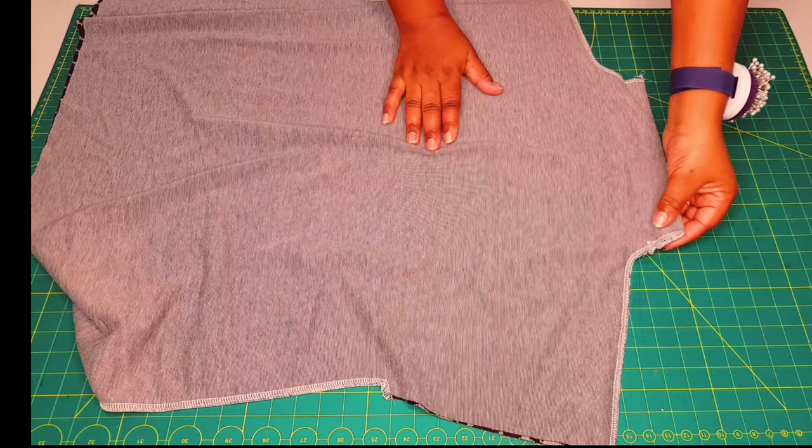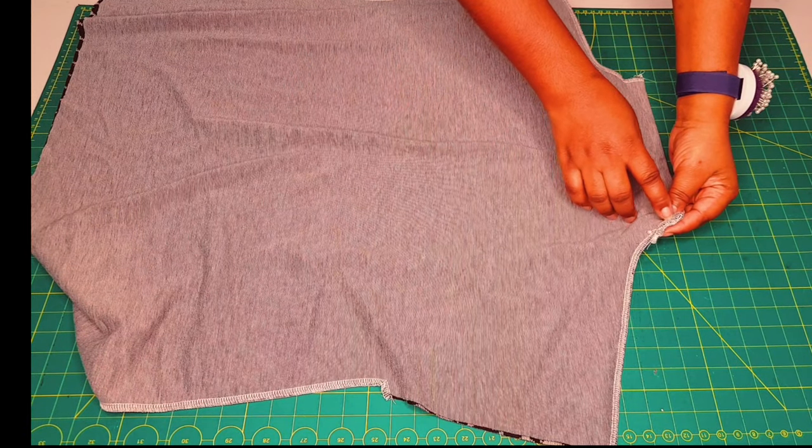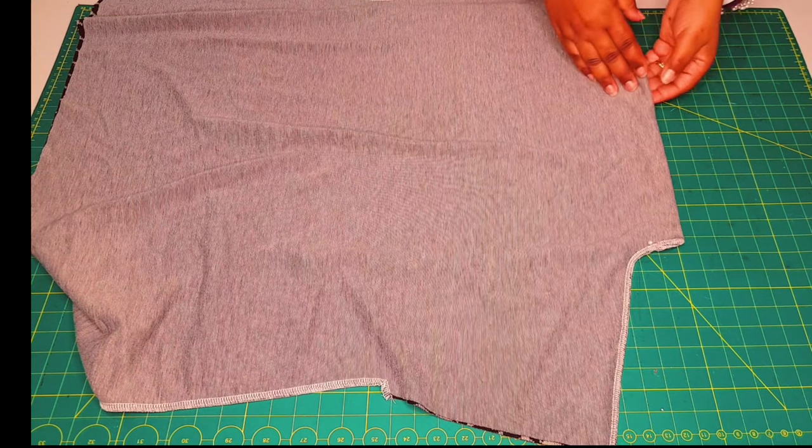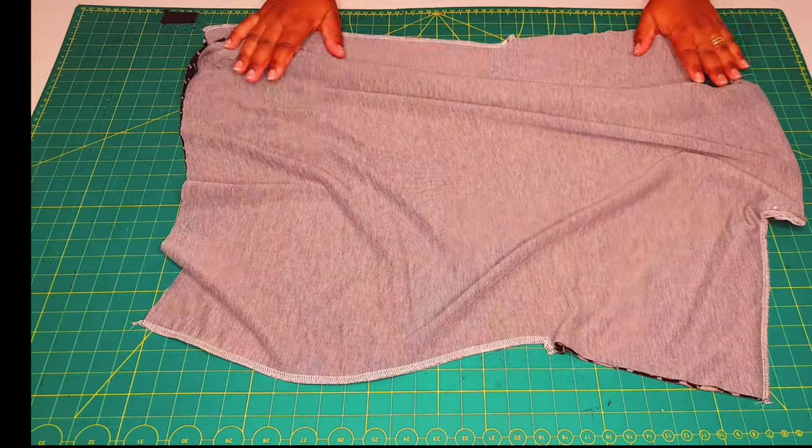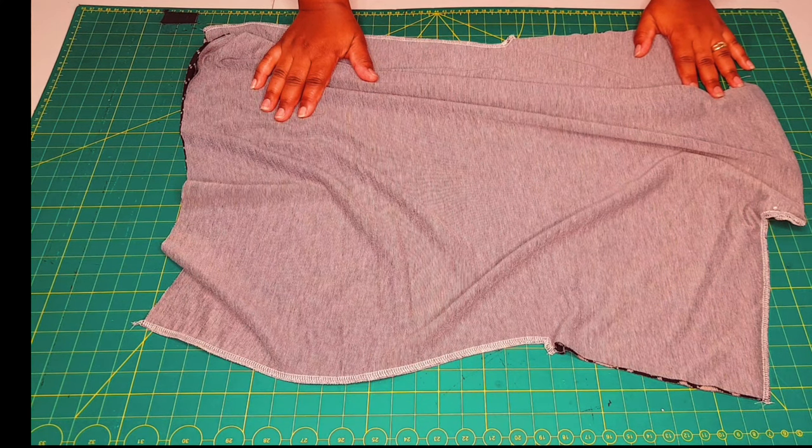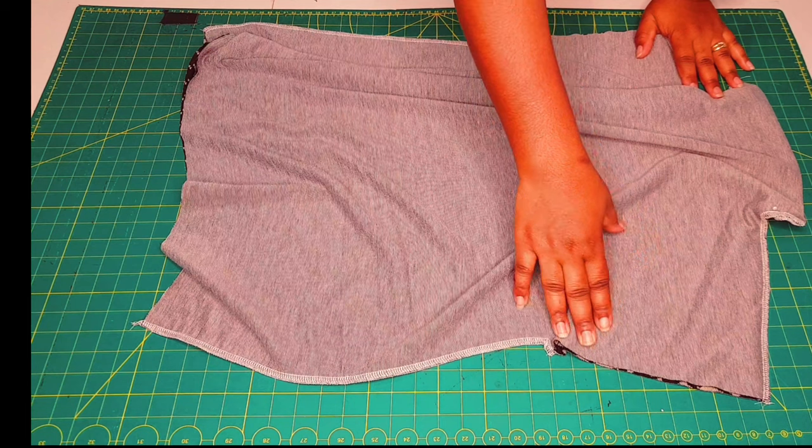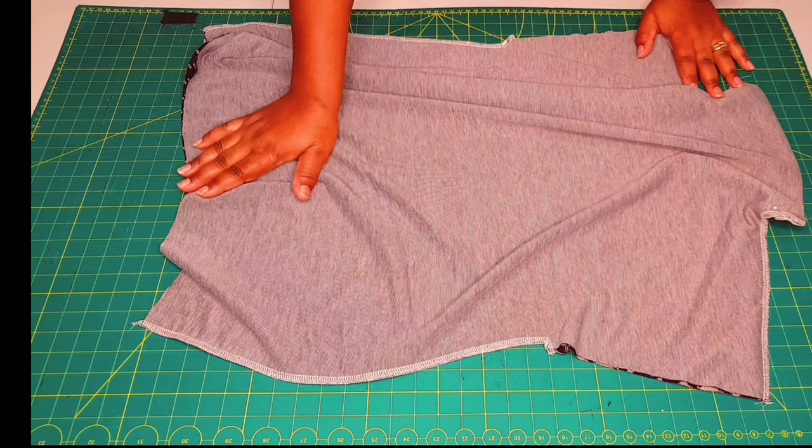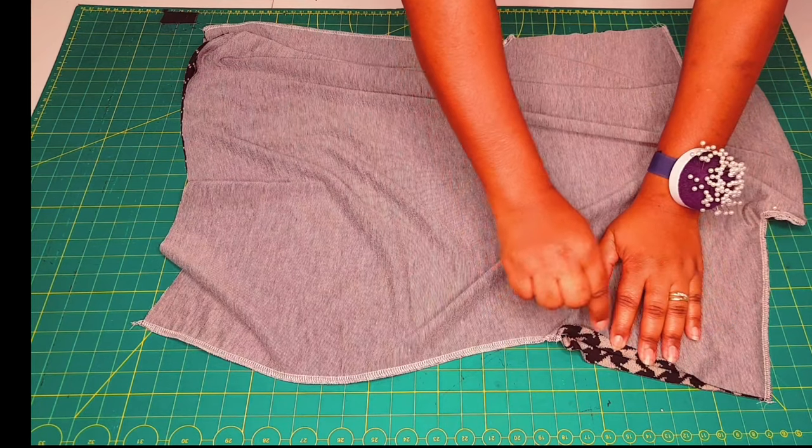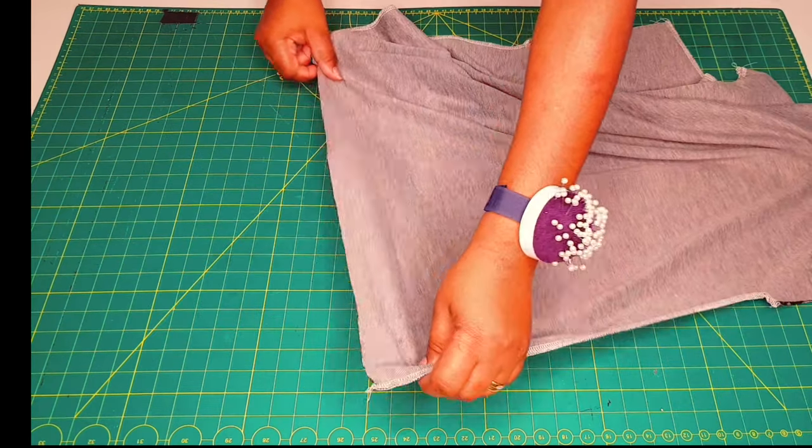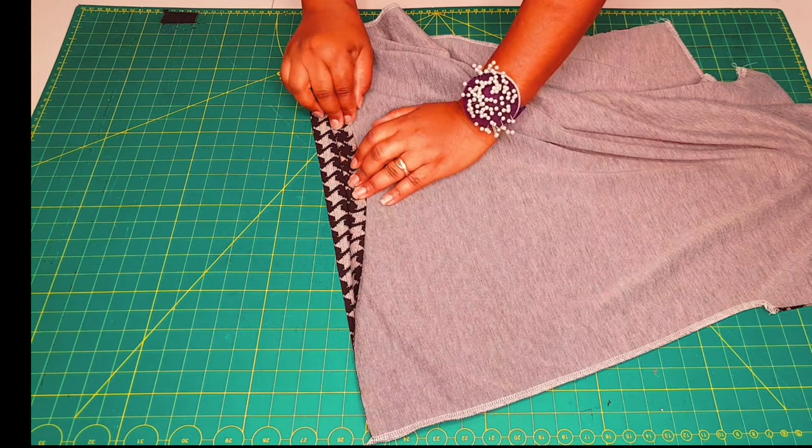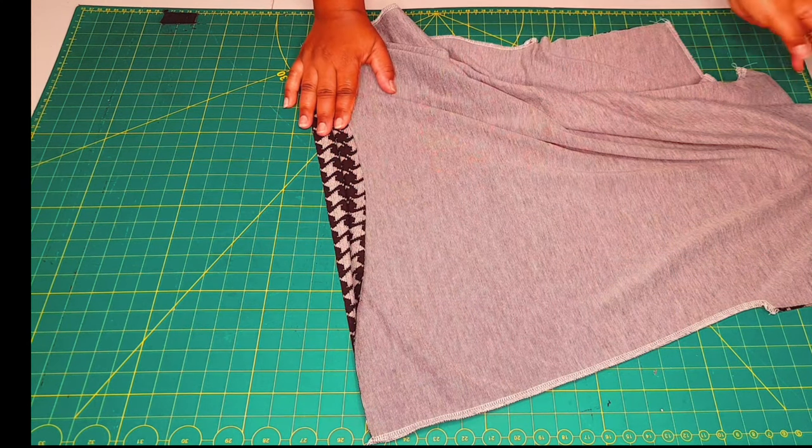Take this to the sewing machine and stitch down the two seam allowances together on both sides so that our collar will sit nicely inside our top. Whilst we're there, we're also going to finish off our hems for the top and the sleeves. Just overlock right round. For the sleeves, turn it under by one centimeter and topstitch it. For the hem, turn it under by two centimeters and sew around with a twin needle.